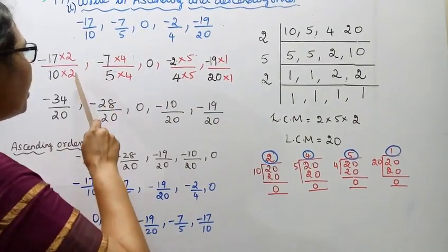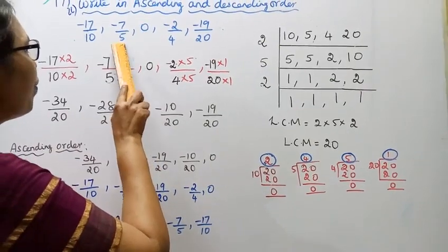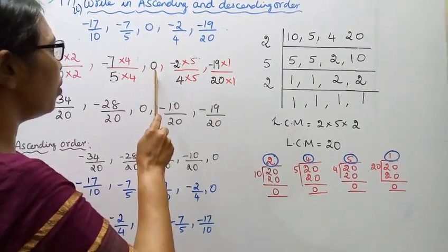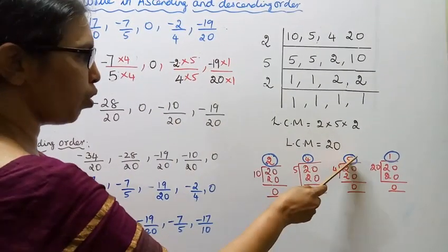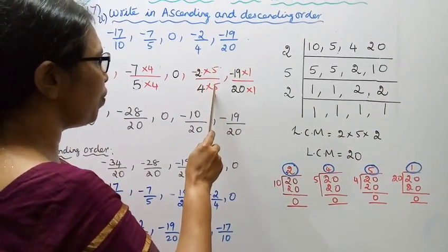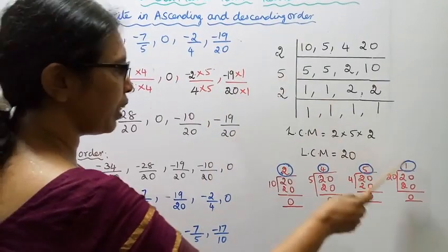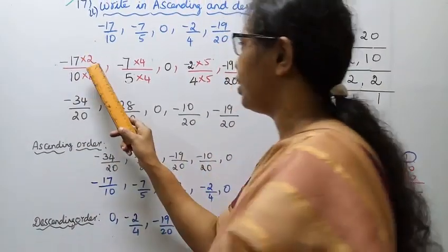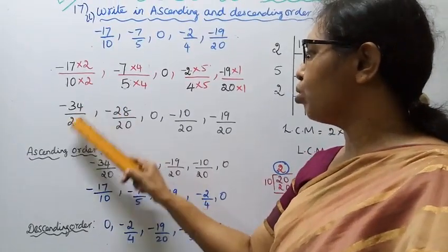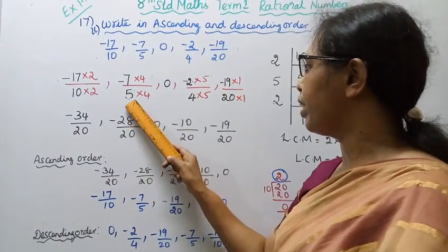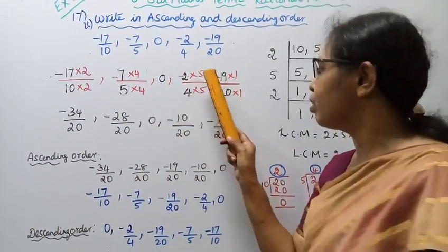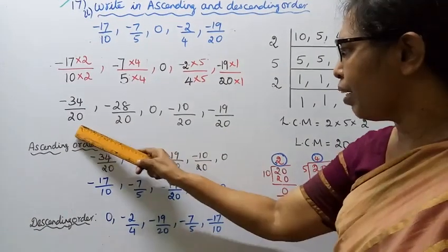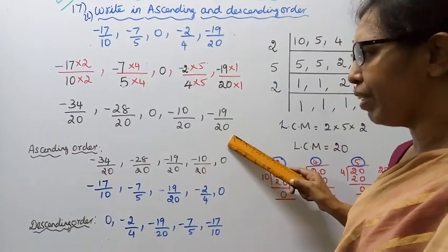For -2/4, quotient is 5, so 5 × 5 = -10/20. For -19/20, quotient is 1, so -19 × 1 = -19/20. So we have -34/20, -28/20, 0, -10/20, -19/20.